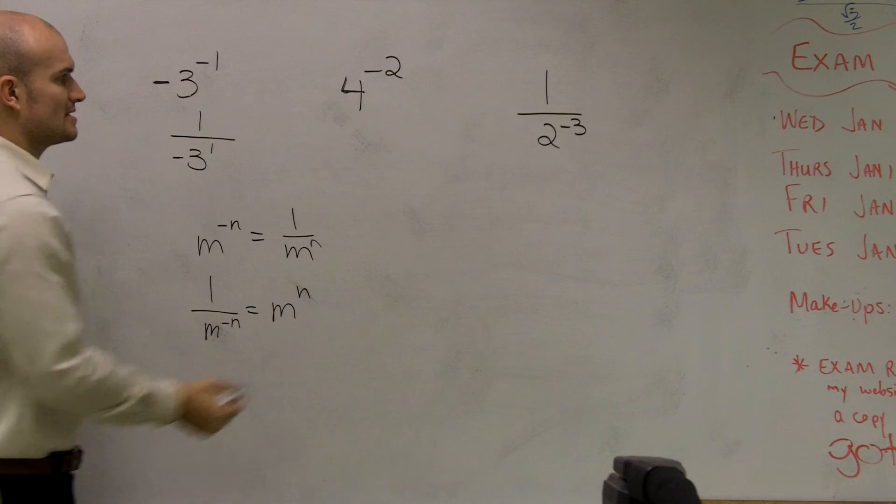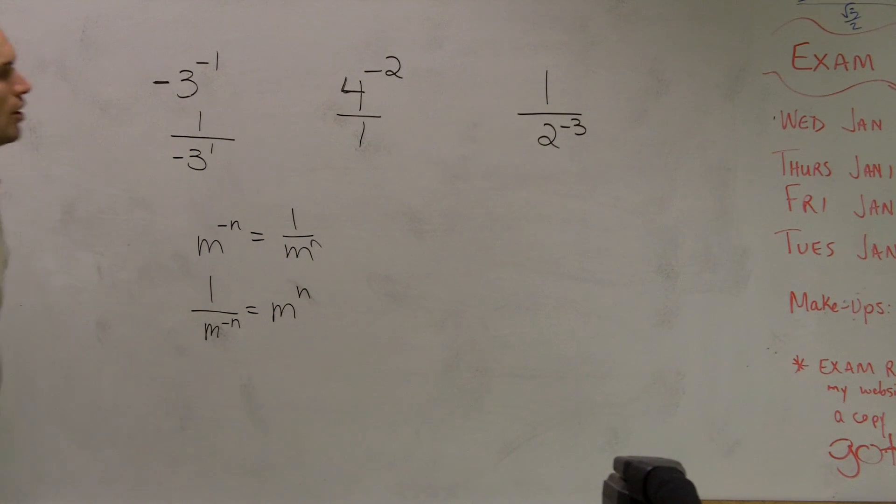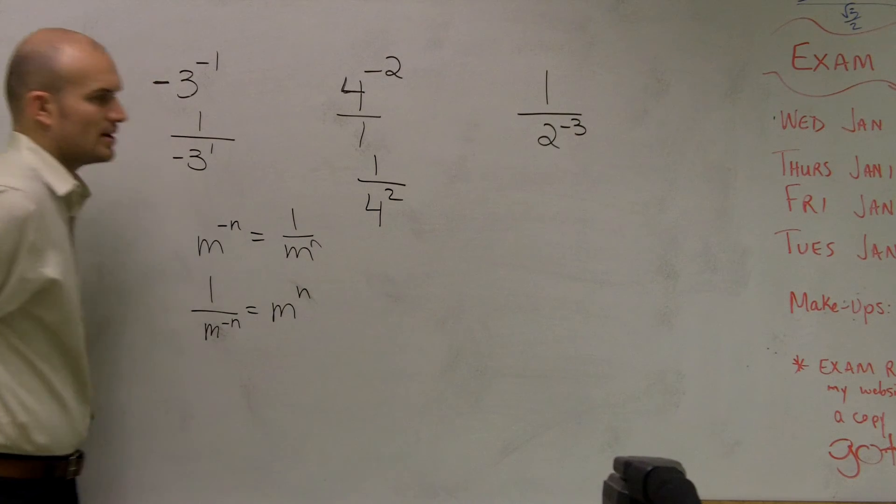Here, I can do the exact same thing. So originally you could say that 4 over 1 is raised to the negative exponent. Now I just need to flip that to 1 over 4 squared.